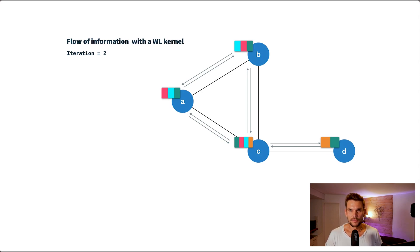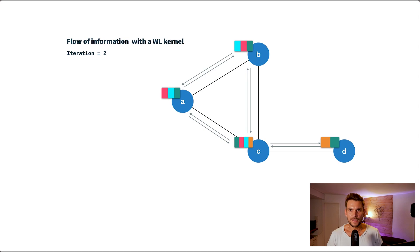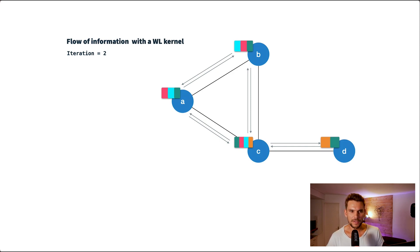There are two things to notice about this approach. First, after two iterations we already have information from nodes at two hops distance, or more generally after k iterations we have information from nodes which are k hops away. Second, each iteration only depends on the result of the previous iteration, and therefore we can consider this approach a Markov chain.